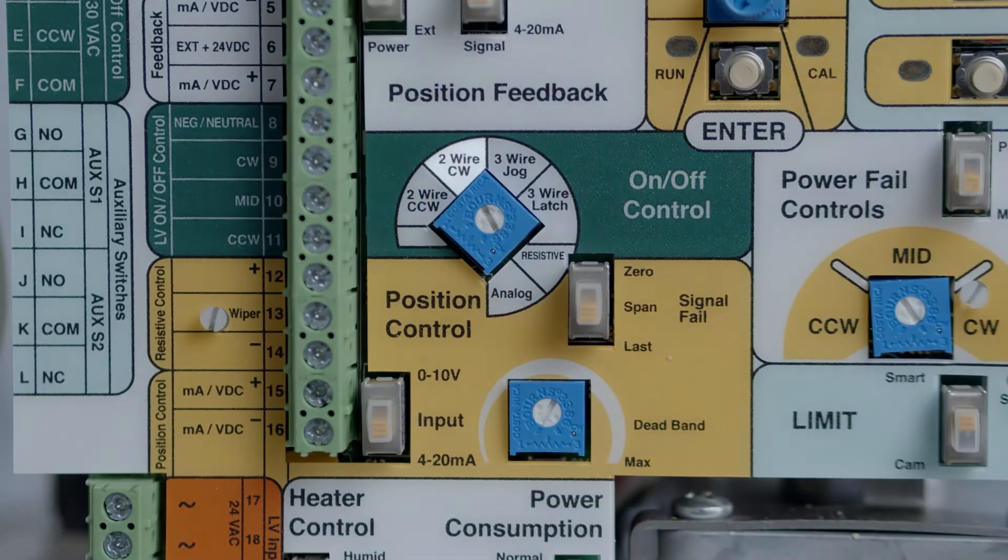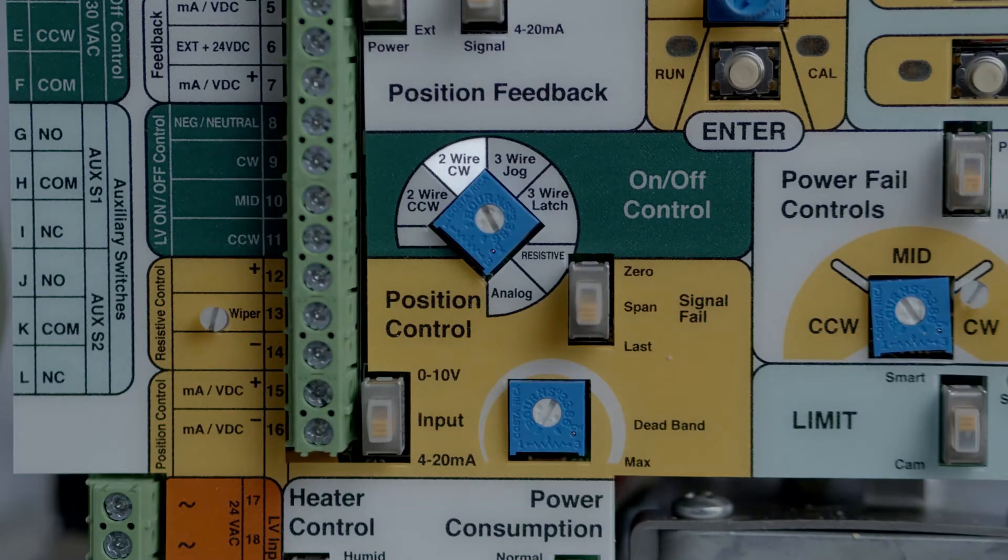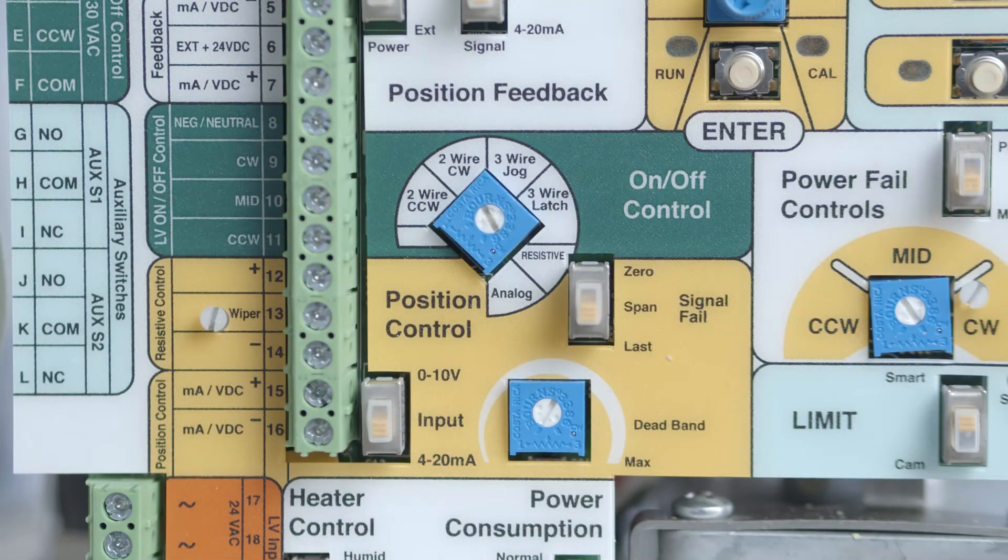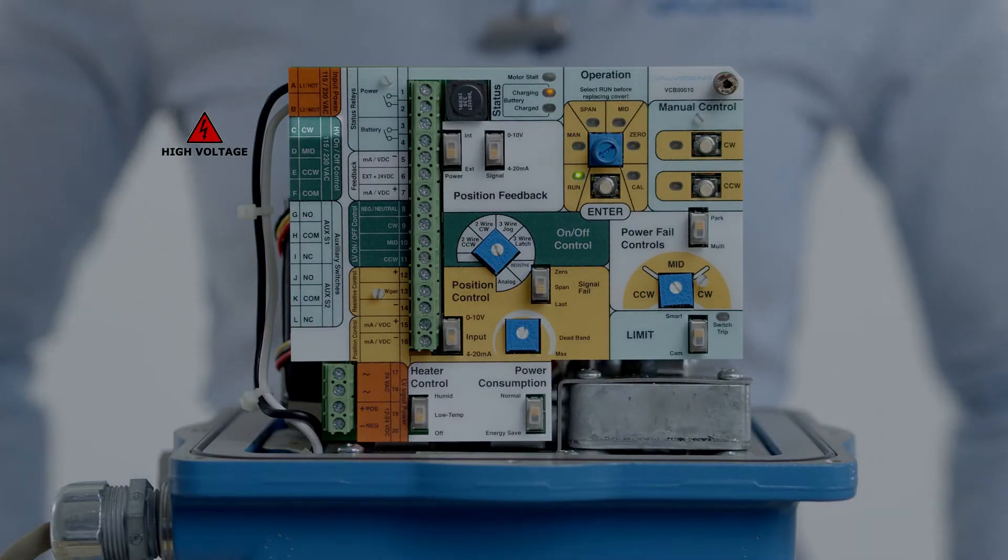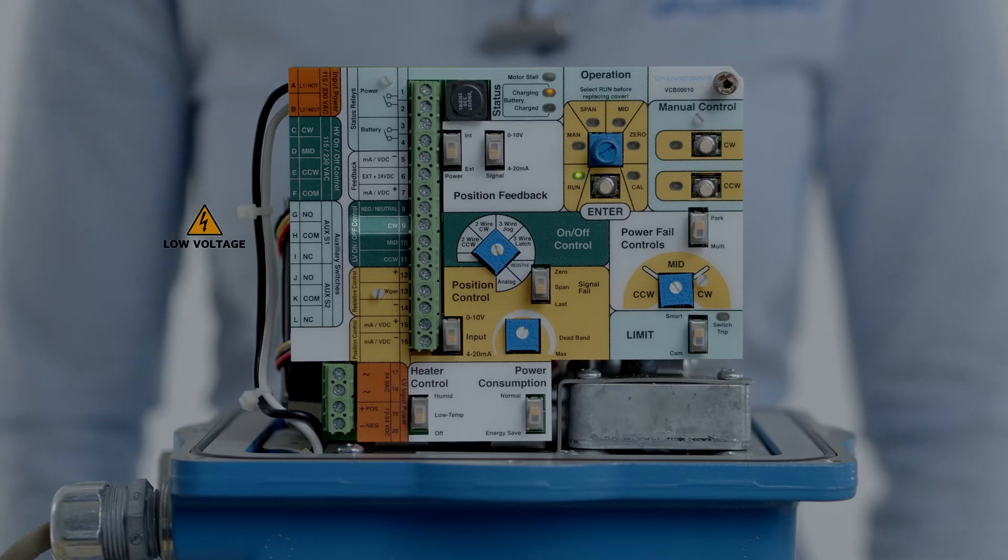Now in two-wire CW mode, the actuator will default to the counterclockwise when only the main actuator power is present and the actuator will drive clockwise when the CW control power is energized.